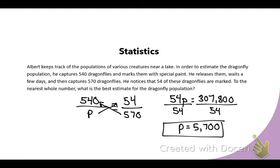Marked dragonflies over total dragonflies. Now I'm going to do my cross products, and I get 54p equals what's 540 times 570? 307,800. When I divide both sides by 54, p equals about 5,700. So again, these questions are multiple choice on your exam, but you need to know the process, how to set up the problem, so you're not guessing. To have a one in four chance at getting the question right, it's not going to turn out favorable. This is how you would have to show some kind of work to get the answer. Otherwise, you will be guessing.